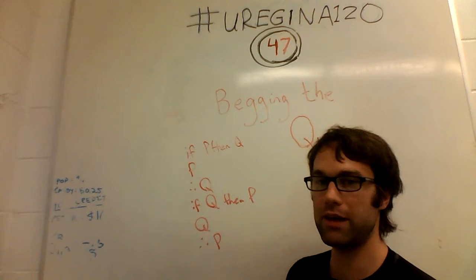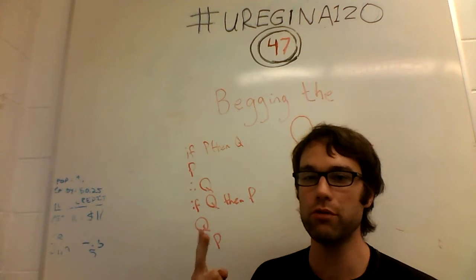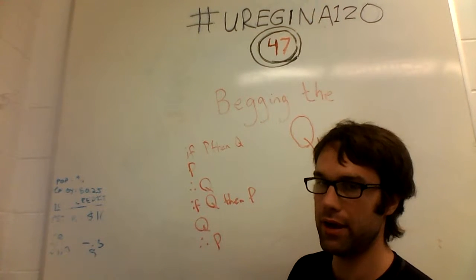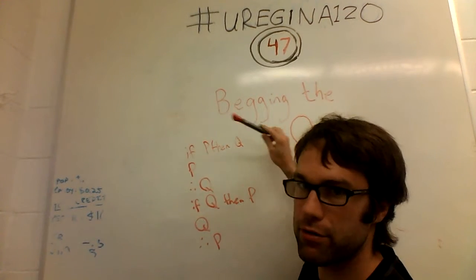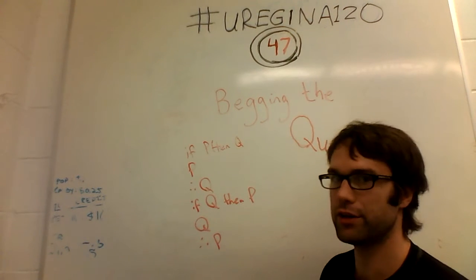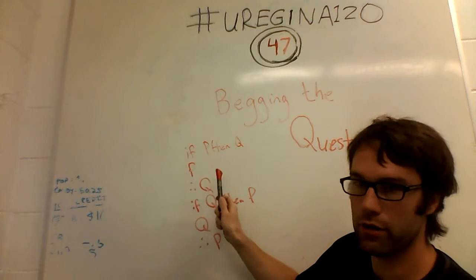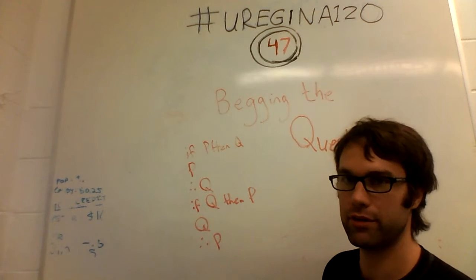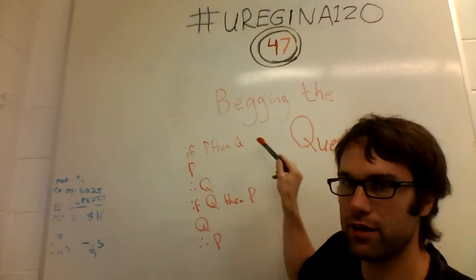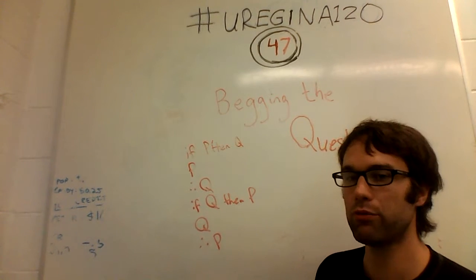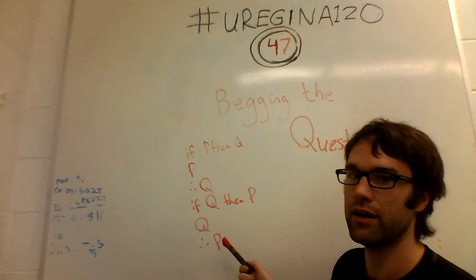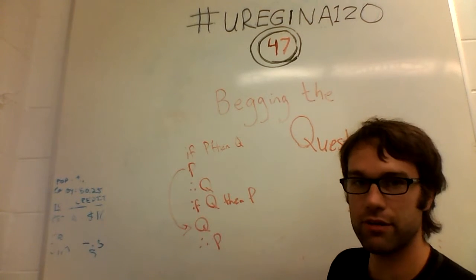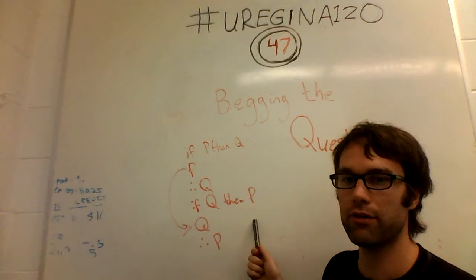The first, and probably the most basic, is where we have two separate arguments — two separate sets of premises and conclusions given together. The first one employs conditional logic: if P then Q, P therefore Q. On its own, that isn't actually invalid; it is a valid way to argue. But the question is: where does this P come from? This P is stated to be true based on the second argument.